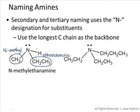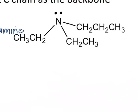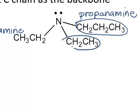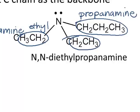Let's try another example. In this molecule, two R groups contain two carbons each, and a third contains three carbons. The longest chain — three carbons — forms the backbone, so the name ends with propanamine. The two substituents are both ethyl groups on the nitrogen. Using the di prefix, the full name is N,N-diethylpropanamine. Capital Ns are treated like numbers: separated from each other with commas and from letters with a dash.